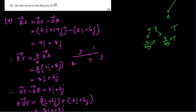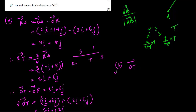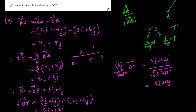Now we have to find the unit vector of OT. The unit vector equals the vector divided by its modulus. So the unit vector of OT = (5i + 12j) divided by √(5² + 12²) = (5i + 12j) / √(25 + 144) = (5i + 12j) / √169 = (5i + 12j) / 13.